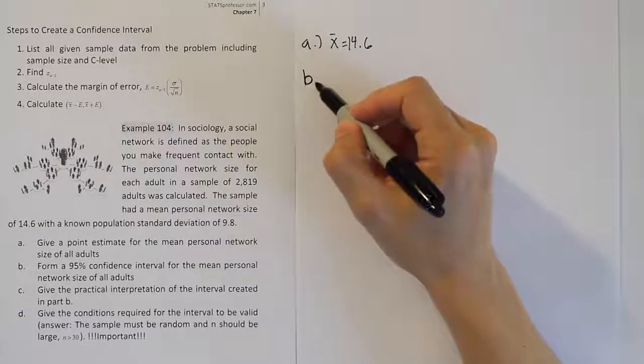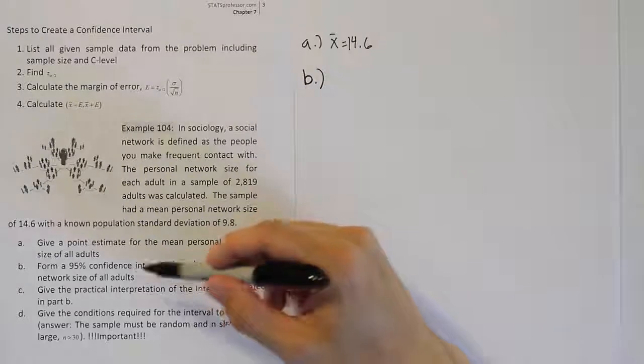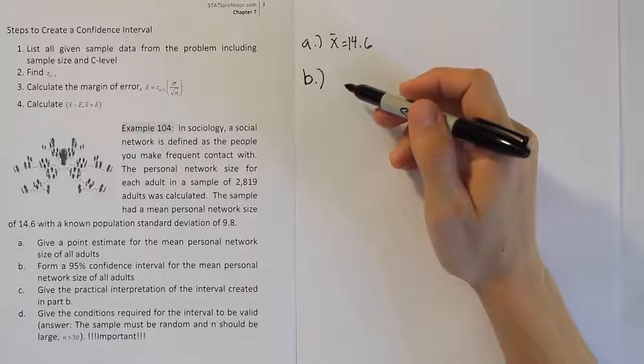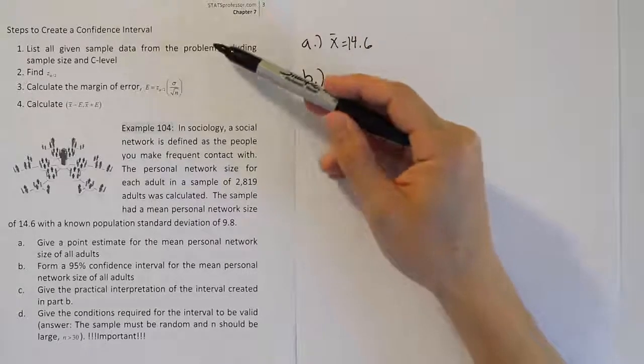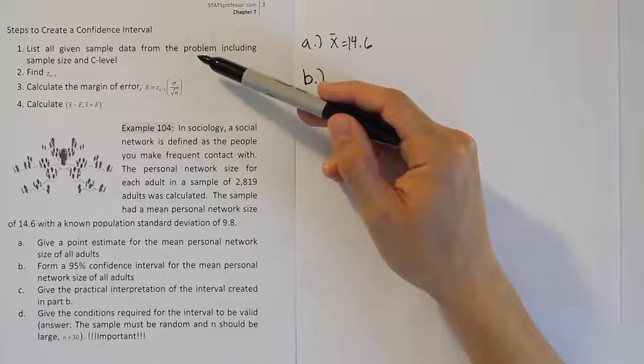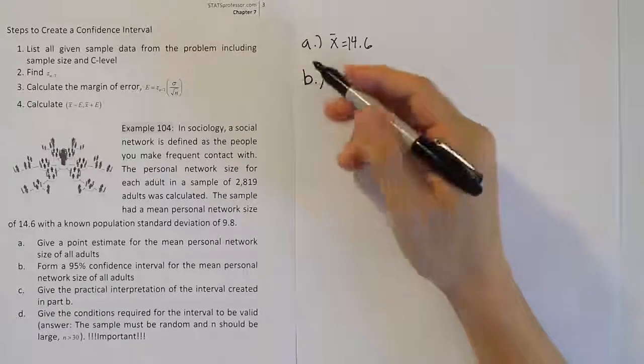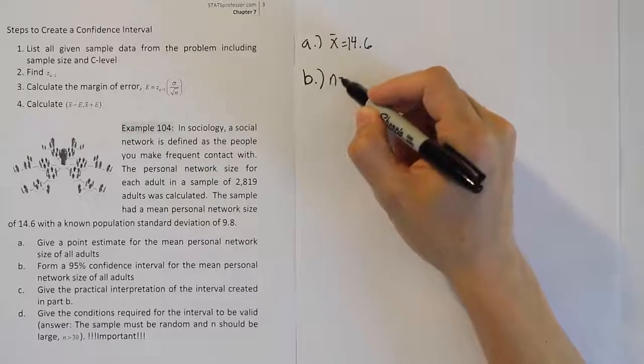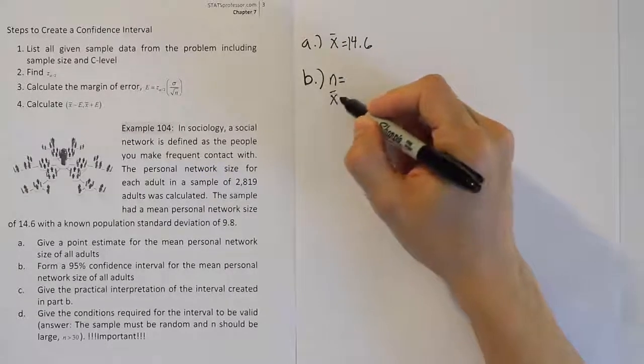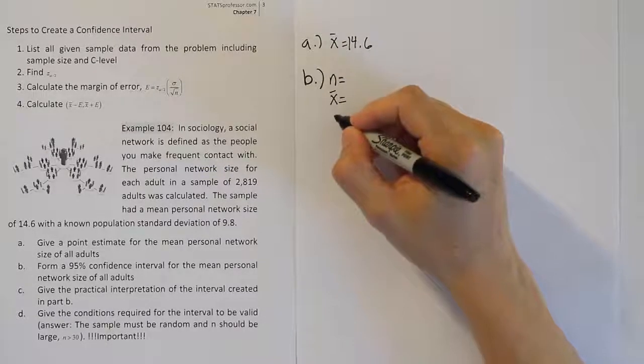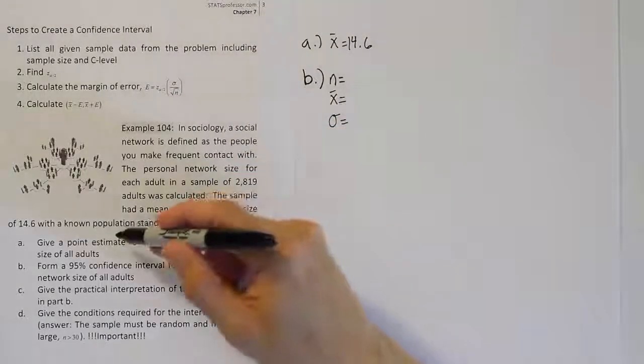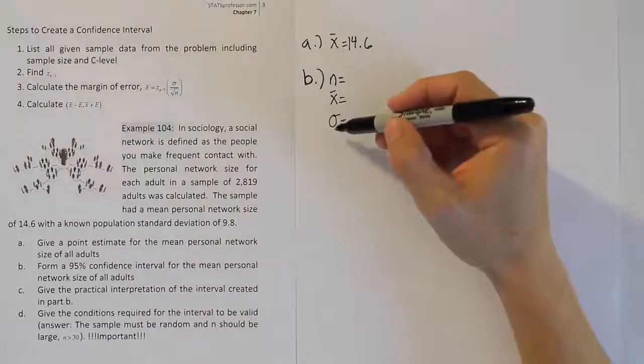Part B says to form a 95% confidence interval for the mean personal network size of all adults. In order to do that, we're going to use the four steps listed in the notes above. Step one, we're going to list all the sample data in the problem: the sample size, the sample mean, and the standard deviation. In this case, it's the population standard deviation, so I'm going to use the symbol σ.